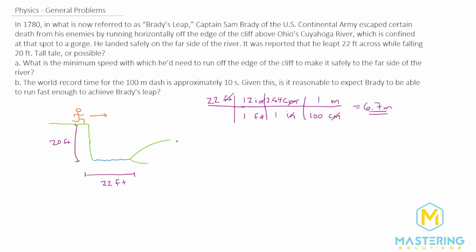So 6.7 meters is the horizontal distance he needs to clear in standard units. Before we figure out his speed, we need to figure out how long he is in the air. We'll look only at the y direction: y final equals y initial plus initial velocity in the y direction times time plus one-half the acceleration times time squared. The initial y is 0 — we set y equals 0 right at the edge — and the initial velocity in the y direction is also 0, since he hasn't started falling yet.